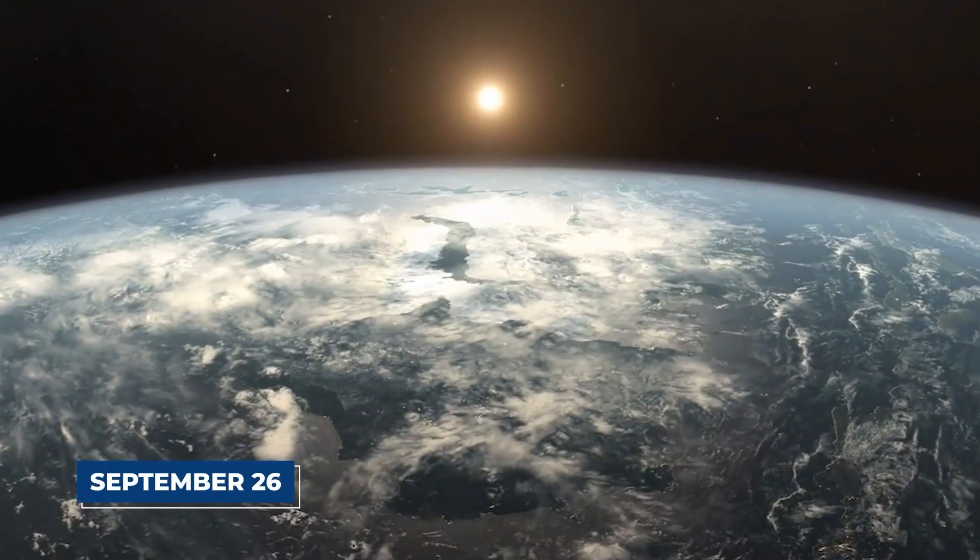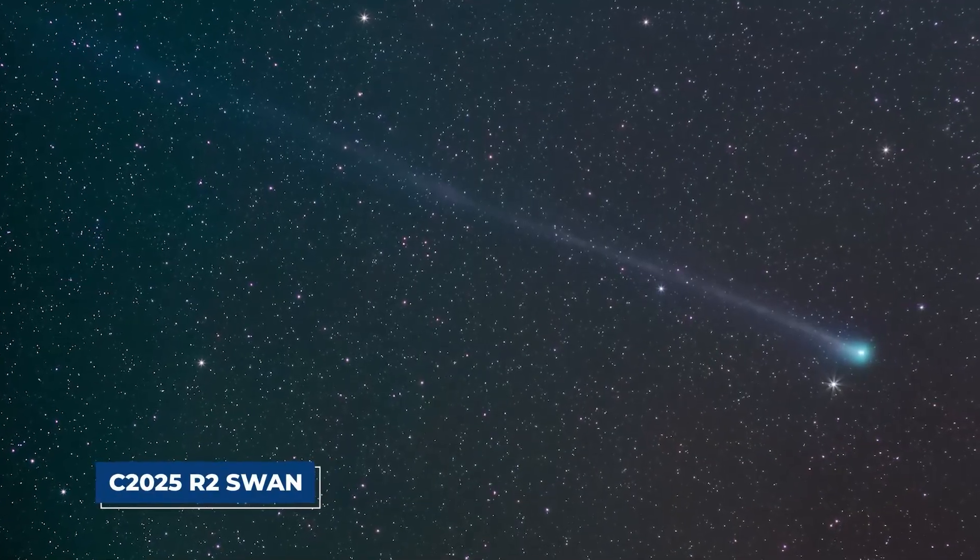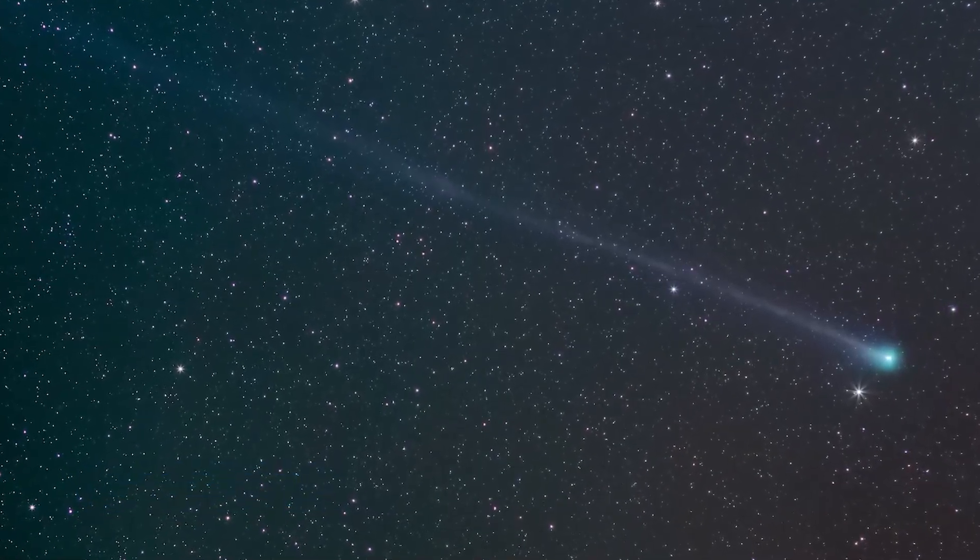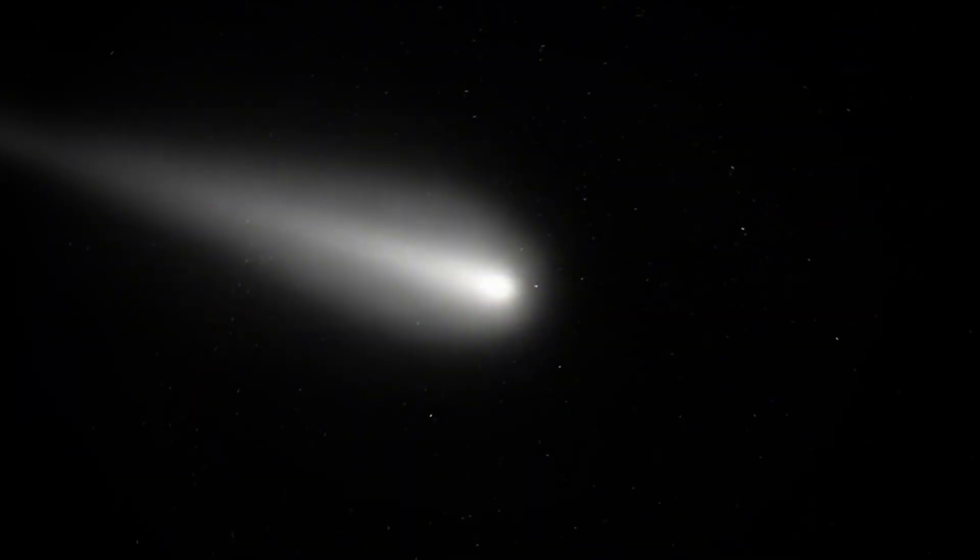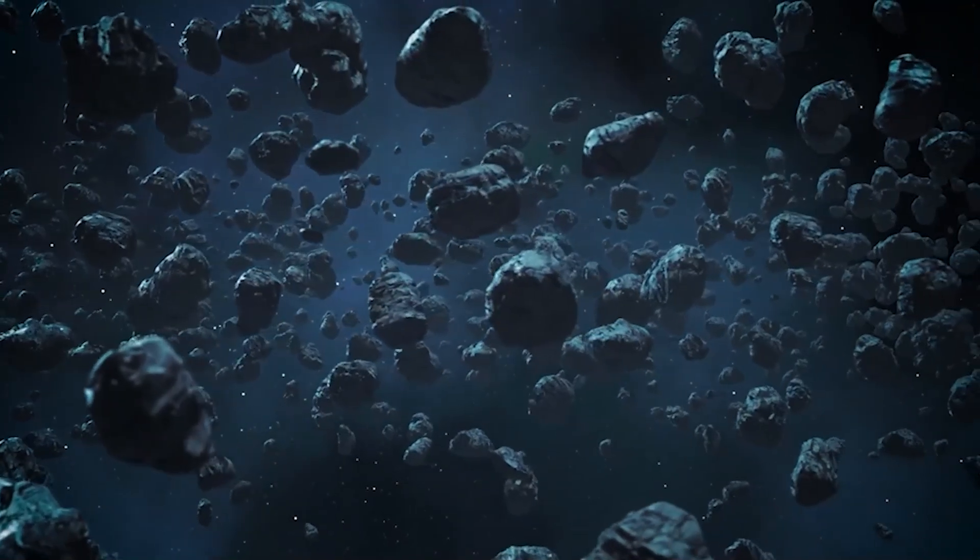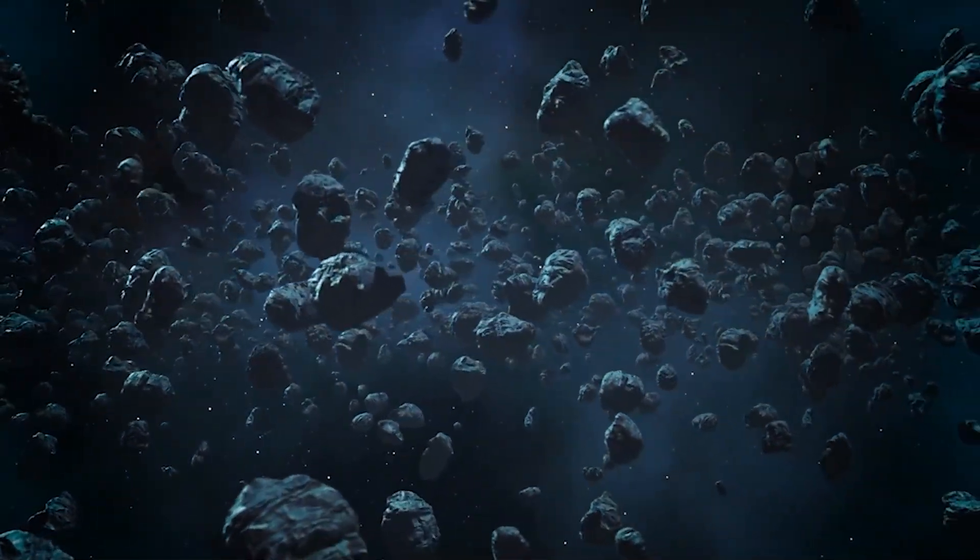Just a few days later, on September 26, something much closer to home reacted. A different object, a comet known as C2025R2 Swan, suddenly underwent a significant outburst. It flared up, becoming dramatically brighter almost overnight. This comet was following its own path, minding its own business, when it suddenly erupted with activity. Astronomers logged it as an interesting but random cometary event.